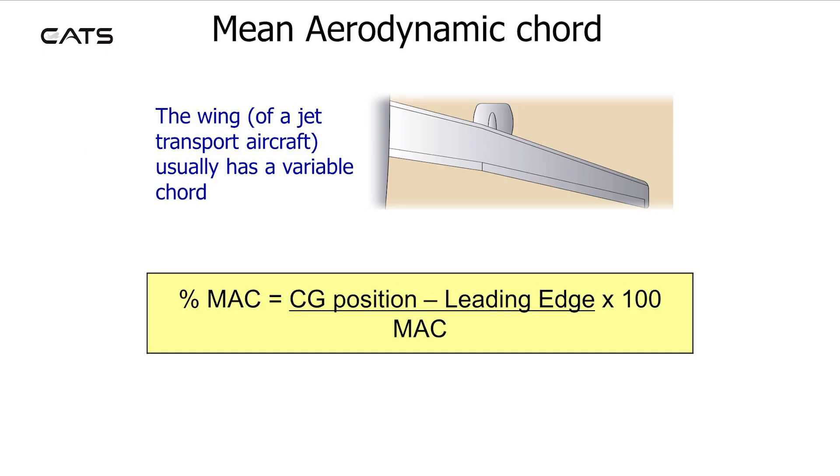Mean aerodynamic chord. The wing of a jet transport aircraft usually has a variable chord. Percentage mean aerodynamic chord equals CG position minus leading edge divided by mean aerodynamic chord, all multiplied by 100.